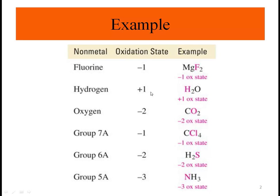Hydrogen is plus one — let's say always. In H2O we have plus two and oxygen becomes minus two. For CO2, carbon is going to be plus four, and we have two atoms of oxygen which is minus two; two times minus two is going to be minus four.